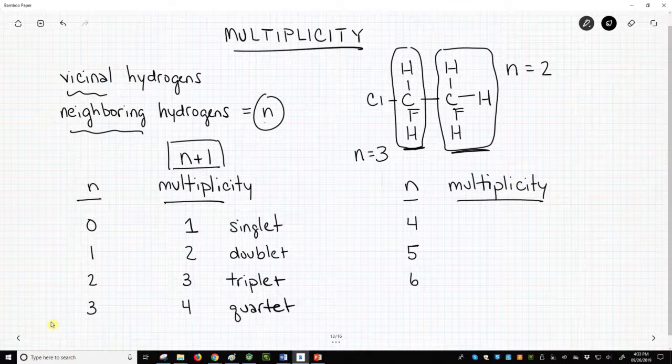If N equals 4, multiplicity is 5. We will have a pentet. N equals 5, multiplicity will be 6. That's called a sextet.